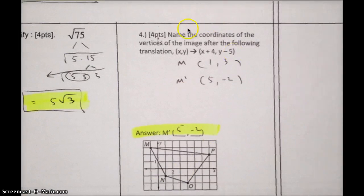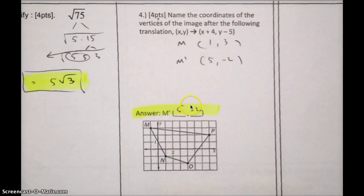Question number 4. Name the coordinates of the vertices of the image after following the translation: (x, y) arrow (x plus 4, y minus 5). This is a rule. The x-coordinates go left and right. So essentially, all you have to do is write down the coordinates that they give you. They want M prime, so you should just write down the coordinates of M. Notice how you do not need N, O, or P. So M has the coordinates of negative 1, positive 3. So what's negative 1 plus 4? So the answer should be 3 here, not 5. And if you take 3 and you subtract 5, you should get negative 2. So the answer is 3, negative 2.